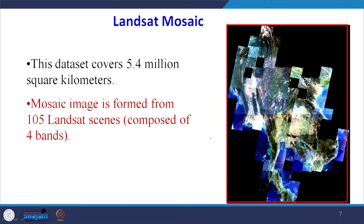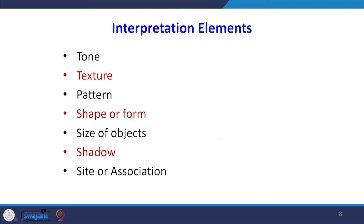This mosaic has been created from Landsat satellite images, covering a huge area since one Landsat image covers 185 kilometers by 185 kilometers. This particular mosaic consists of 105 Landsat images. Once 105 Landsat images have been mosaicked, we can mark our study area and carry out the interpretation from that.